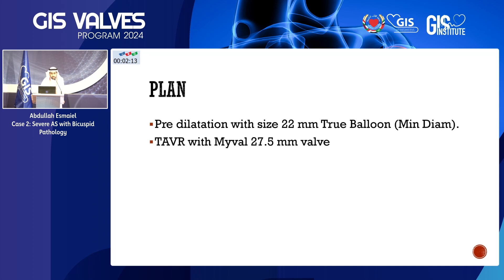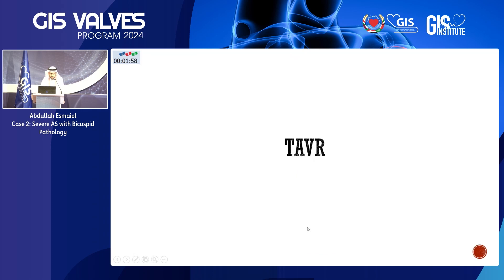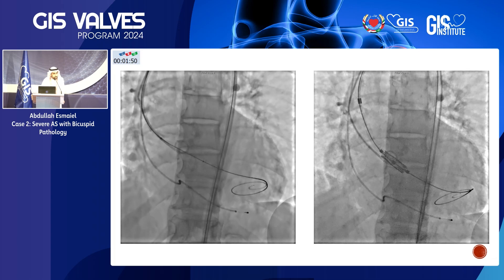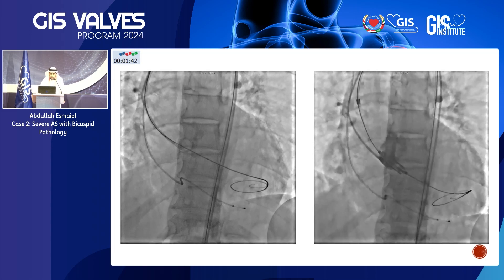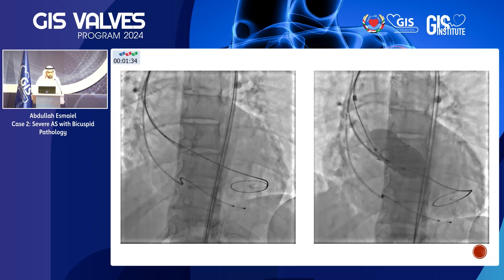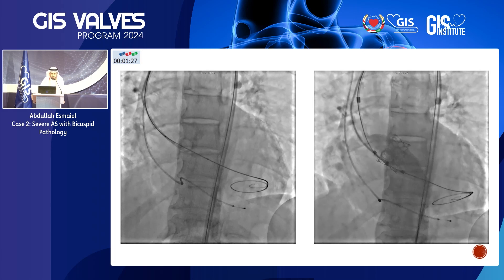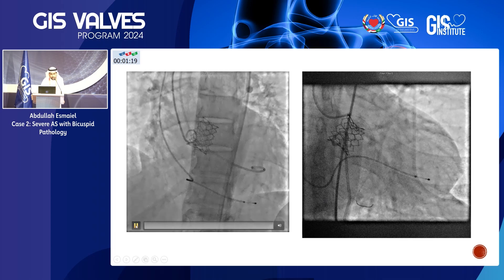The plan was to pre-dilate with a 22 mm True balloon sized to the minor diameter, then implant a Myval 27.5 mm valve, as the annulus diameter was 26.5 mm. We performed TAVI before PCI because of concern for hemodynamic collapse during PCI in the setting of severe AS. During valve deployment, the patient arrested and required brief resuscitation. At that point the valve was not fully expanded — there was significant resistance while inflating the balloon and we stopped pushing given the patient's reduced contractility. After very short resuscitation, the patient recovered.